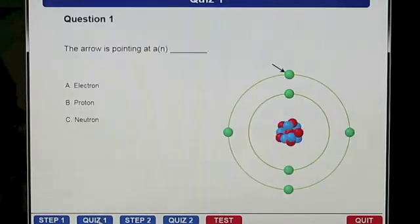So let's go to quiz one. The arrow is pointing to an electron.